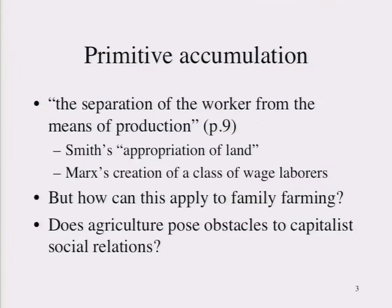Kloppenberg works through a Marxian lens, focusing on primitive accumulation and commodification. He defines primitive accumulation as the separation of the worker from the means of production — very similar to Adam Smith's notion of the appropriation of land and Marx's notion of the creation of a class of wage laborers. He starts from a conundrum: how do you apply this to family farming? If the Jeffersonian American ideal of a yeoman farmer is someone who farms at a family scale and owns their own land, how can you possibly consider that person part of the proletariat? They're not wage laborers — they own their means of production.